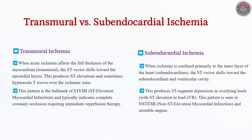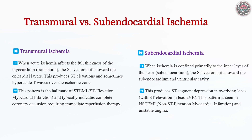Ischemia affects the myocardium in different ways. Transmural ischemia, or STEMI, involves the full thickness of the myocardial wall, leading to an outward shift in the electrical vector, producing ST elevation, indicating complete coronary occlusion and necessitating immediate reperfusion therapy. Subendocardial ischemia, or NSTEMI, is limited to the inner myocardial layers, shifting the electrical vector inward, resulting in ST depression, often requiring intensive medical management rather than immediate reperfusion.